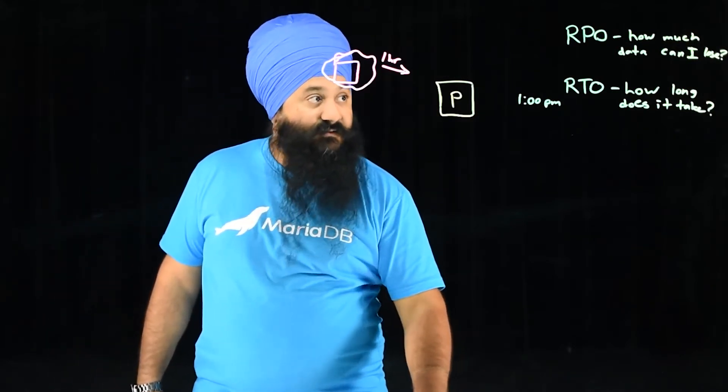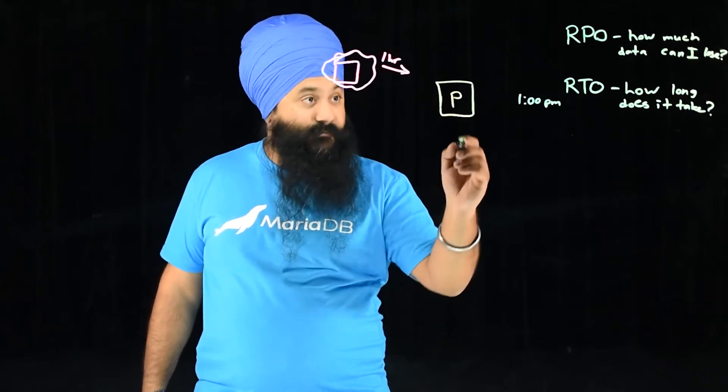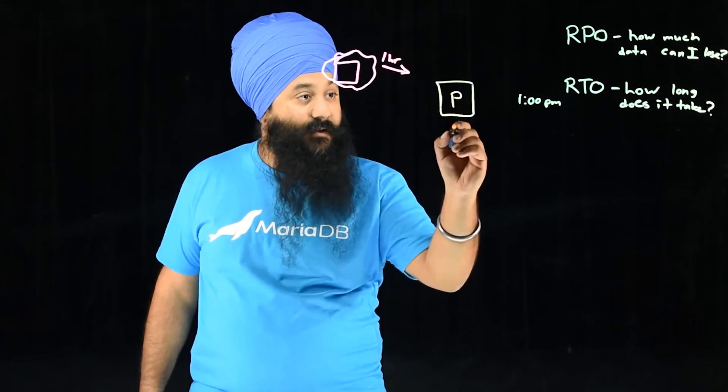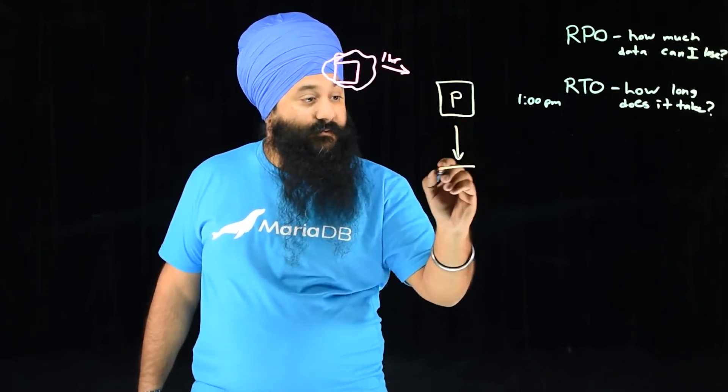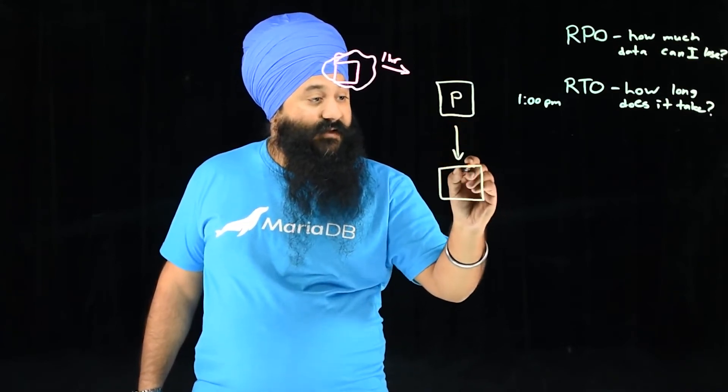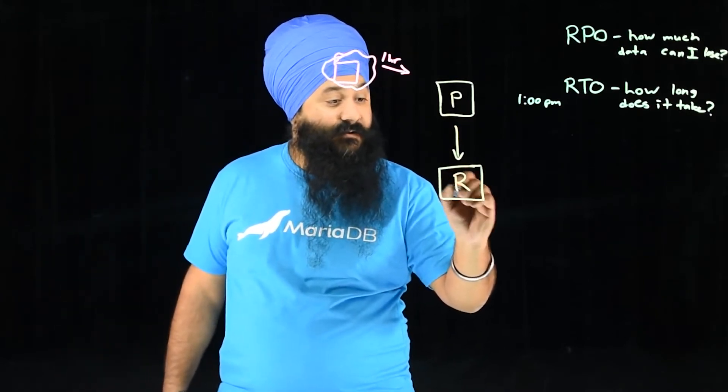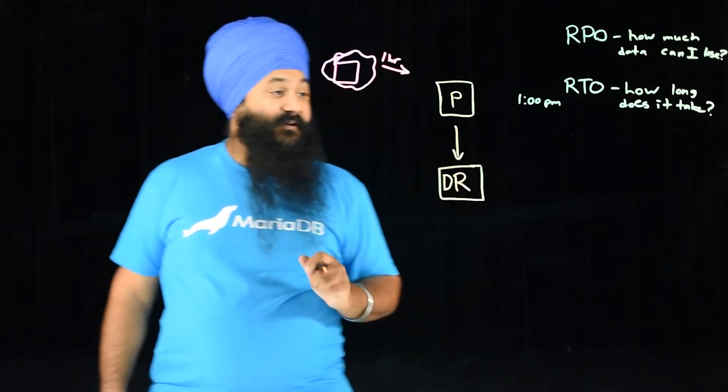So how do we reduce both of those at the same time? The answer is delayed replicas. And delayed replicas work like this. You'll have a replica, but you'll set the variable master delay on the delayed replica when you configure it.